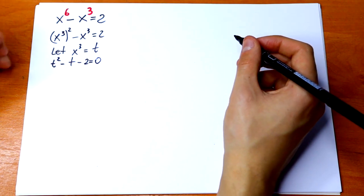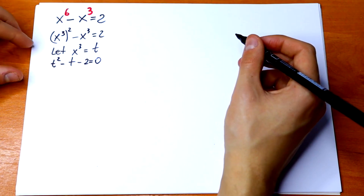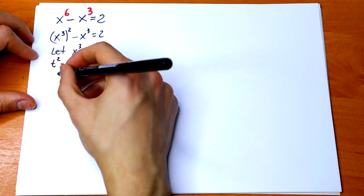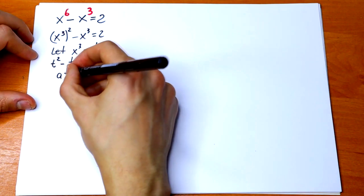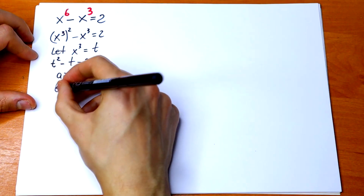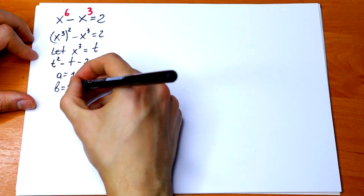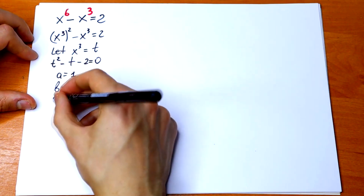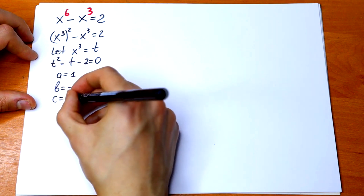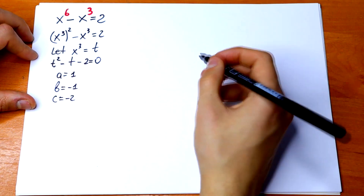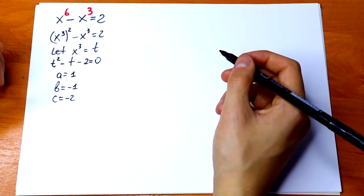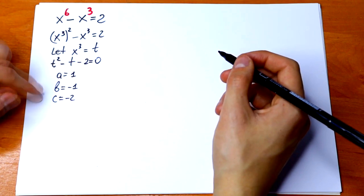I'm sure you've solved this before. So how can we solve this? a equal to 1, b equal to minus 1, and c equal to minus 2.